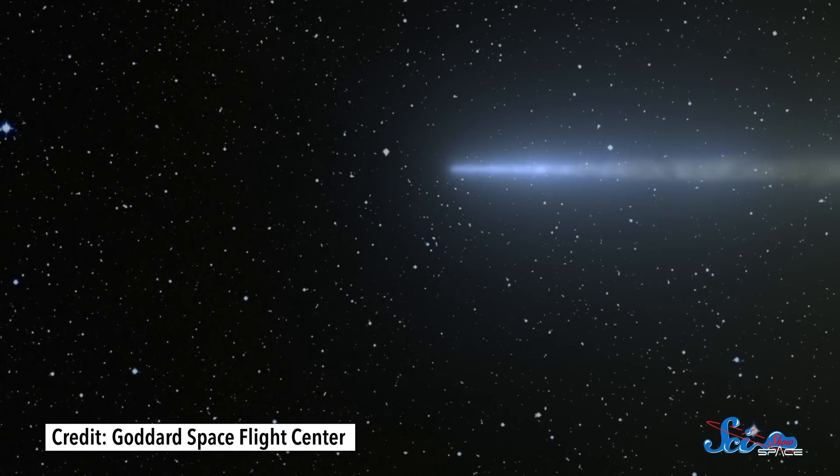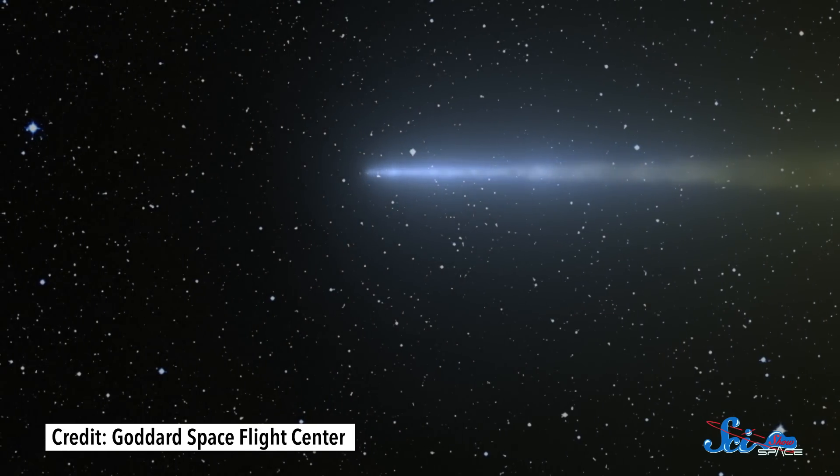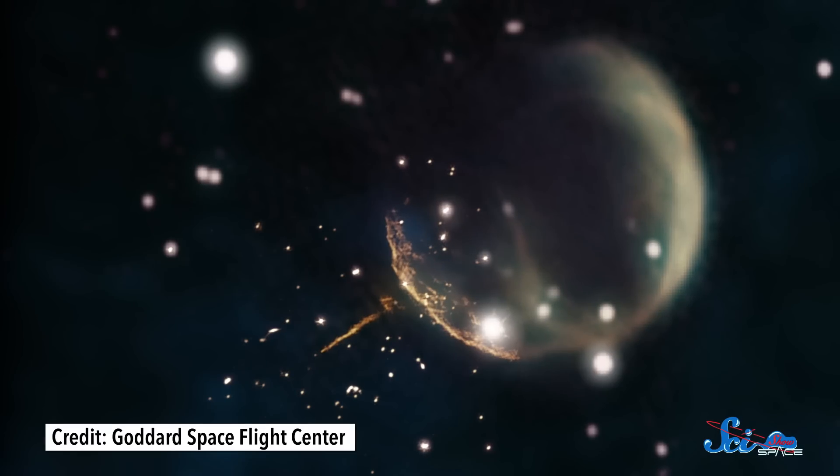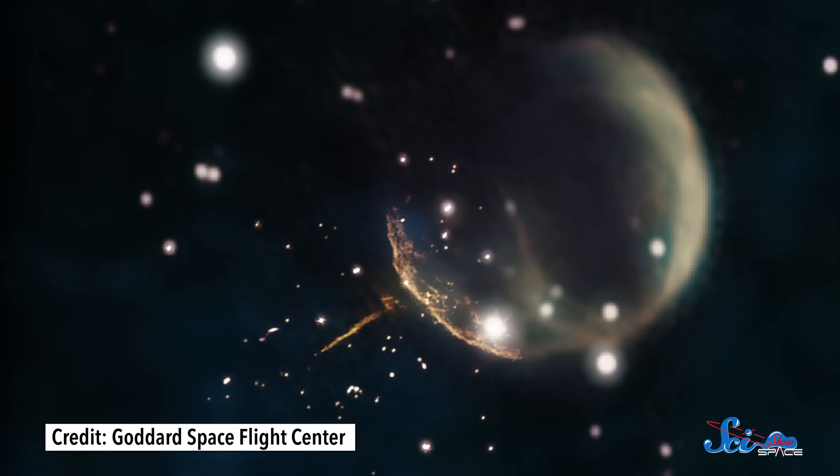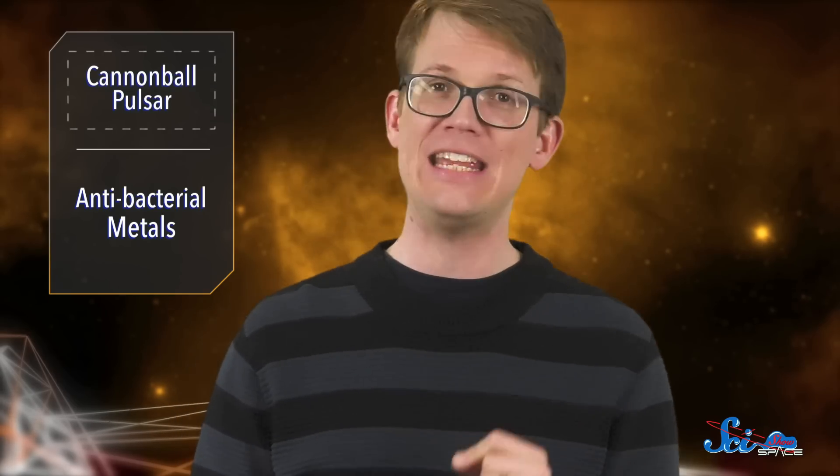This thing moves through space at around 4 million kilometers per hour, which is faster than 99% of measured pulsars. Follow-up observations by the ground-based Very Large Array also revealed that it has a dramatic 13-light-year-long tail caused by a shockwave that forms as the super-speed object blasts through nearby gas. Yeah, I said 13 light years!